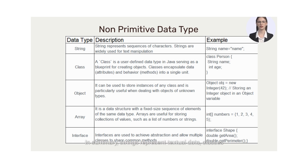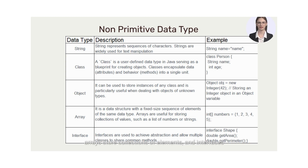In summary, strings represent textual data, classes define blueprints for objects, objects are instances of classes with unique states and behaviors, arrays store collections of elements, and interfaces specify contracts for implementing certain behaviors.